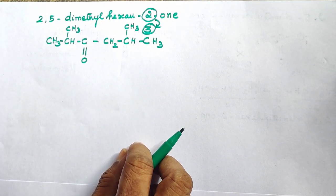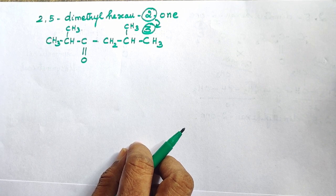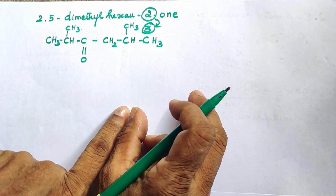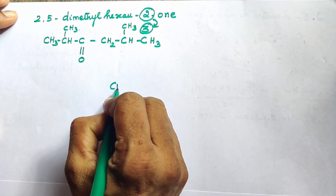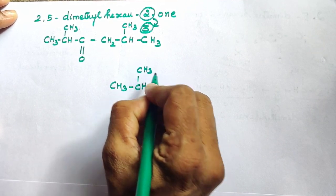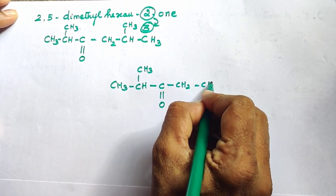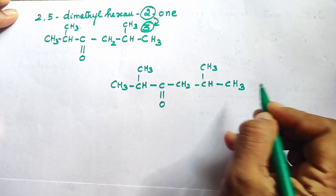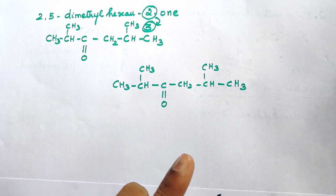So in this compound, what we need to do is oxidize it using a strong oxidizing agent. The structure is: CH3-CH(CH3)-C(=O)-CH2-CH(CH3)-CH3. This is 2,5-dimethylhexan-3-one.